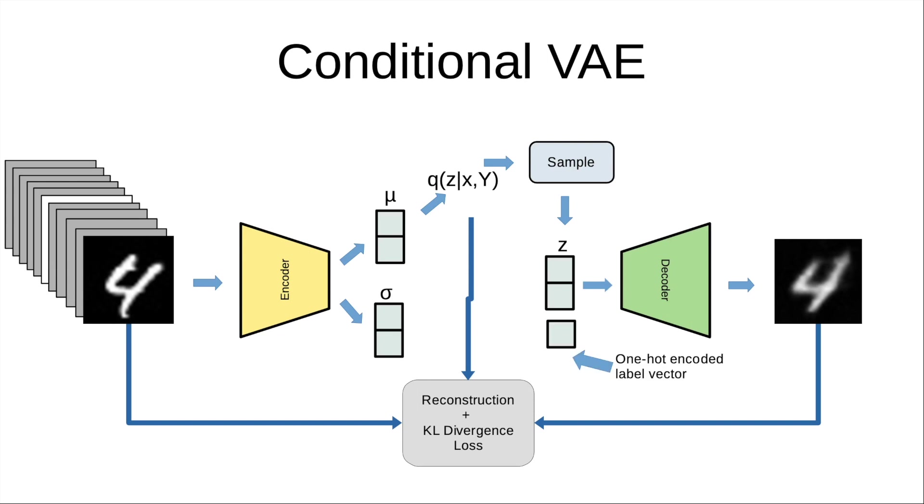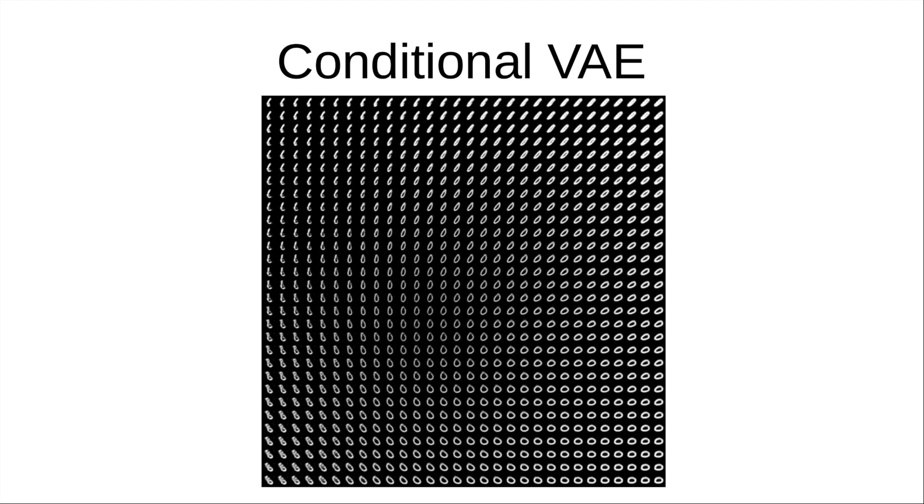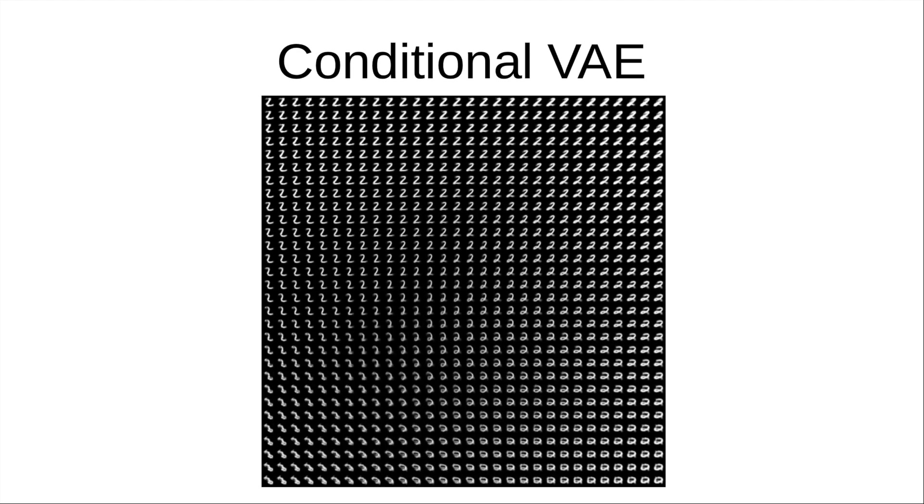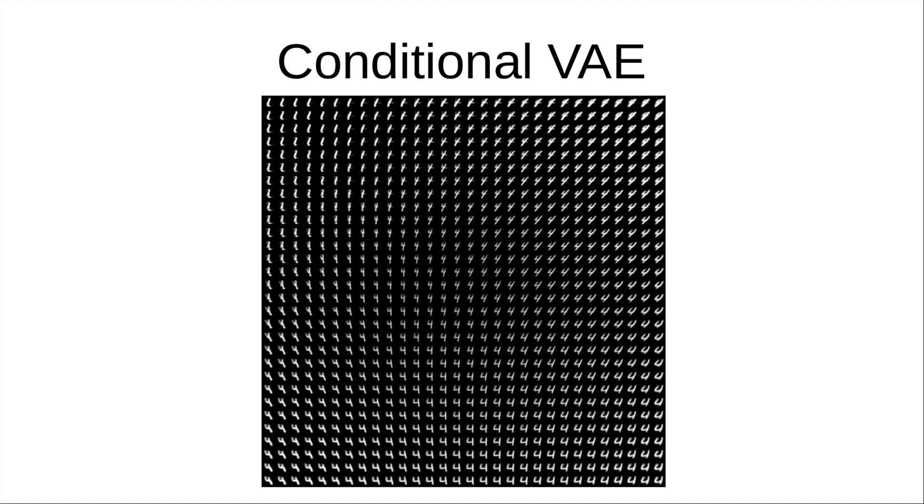Once we train this, we are going to see that because we are feeding the label information, the latent space need not encode any class-specific information. Rather, class-agnostic information like stroke width, direction of tilt, width of the digit, etc. might be encoded in the latent space. Which is why, from all regions of the latent space, we can generate all numbers, by changing only the label information.